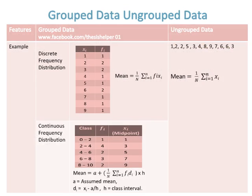An example of grouped data includes two types: discrete frequency distribution and continuous frequency distribution, and the formulas for the mean for both types are provided. An example of ungrouped data shows data not yet organized and in raw form, with its own mean formula, which differs from the formulas used for grouped data.